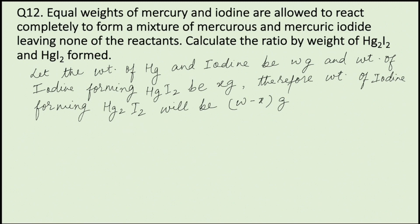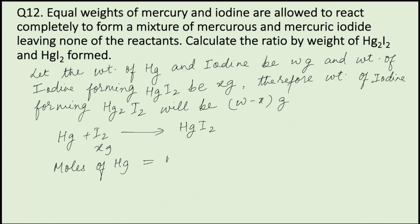Now writing the reaction for the formation of HgI₂: Hg plus I₂ forming HgI₂. Now the weight of iodine here is x grams. Applying the principle of atom conservation on mercury, we can write moles of mercury is equal to moles of HgI₂.